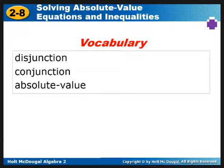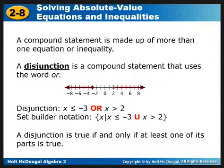Some key terms: disjunction, conjunction, and obviously absolute value. We'll start talking about disjunctions and conjunctions right away. Basically, disjunctions and conjunctions are specific types of compound inequalities — or, more precisely, they describe the structure of absolute value equations.